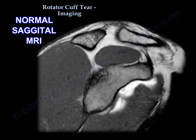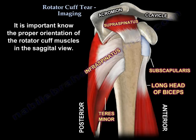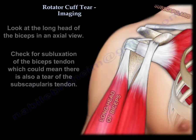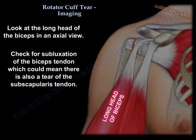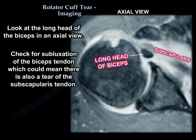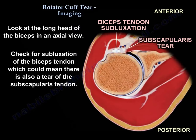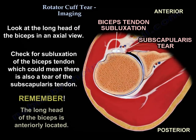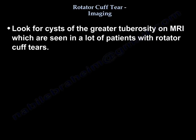It is important to know the location of muscles in the sagittal view and get proper orientation. In the sagittal view, locate the supraspinatus and subscapularis on one side, and the infraspinatus and teres minor on the other. Then look at the biceps — usually in an axial cut — to see if there is any subluxation, which could indicate a subscapularis tear, especially of the superior part. Remember, the biceps is anteriorly located. Also look for cysts on the greater tuberosity on MRI, which are seen in many patients with rotator cuff tear.